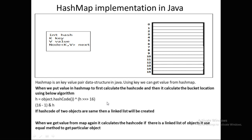While putting values, it can happen that two objects have the same hash code — that's a collision. In that scenario it will create a linked list, and that linked list will hold the objects. Whenever a second object has the same hash code, it will be appended to the next pointer of the linked list. However, after Java 8 this changed — it uses a self-balanced tree instead of a linked list.